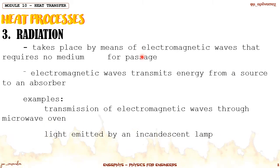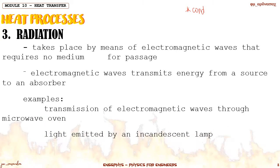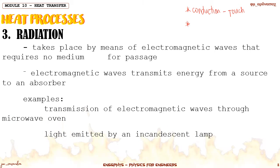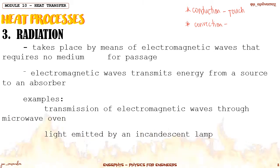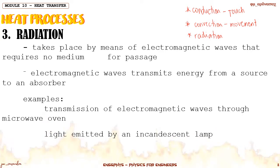To review the three heat processes: conduction is transfer through touching or physical contact; convection is transfer by the movement of heated objects or heated particles; and radiation is transfer through electromagnetic waves.